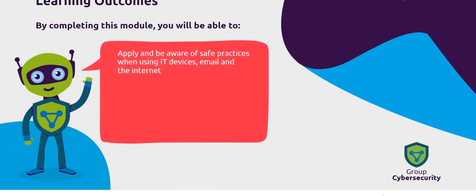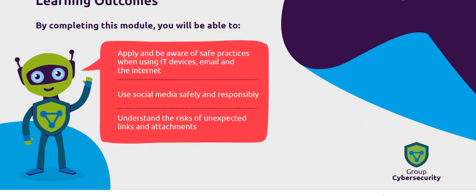By the end of this module, you will be able to apply and be aware of safe practices when using IT devices, email and the Internet. You will also be able to use social media safely and responsibly. Lastly, you will understand the risks of unexpected links and attachments.